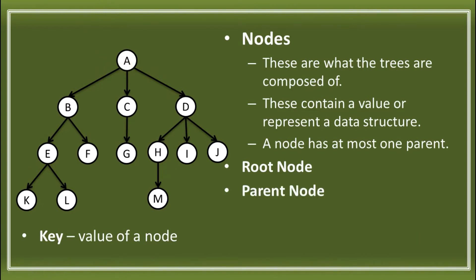Next, we have the parent node and child node. Let's say we have A — that is the root node. We can consider A as a parent of B, C, and D. Then B, C, and D are the child nodes of A. We can also consider B as a parent node of E and F, so E and F are the child nodes of B. We can see this from the arrows showing their relationships.